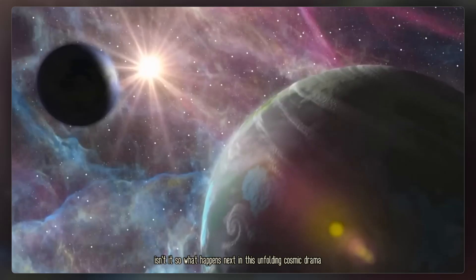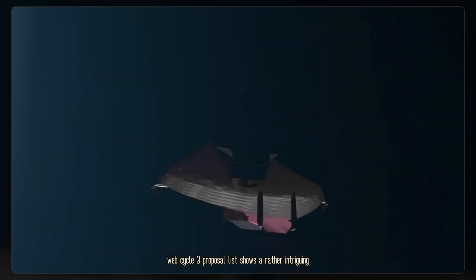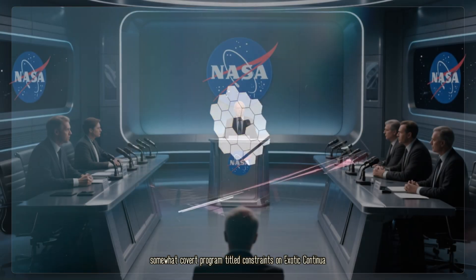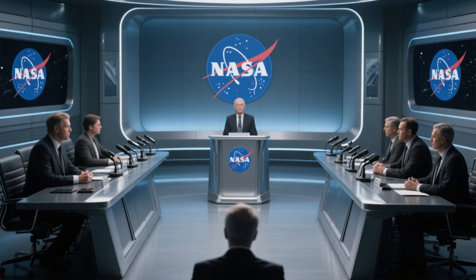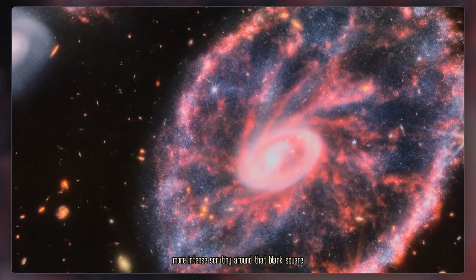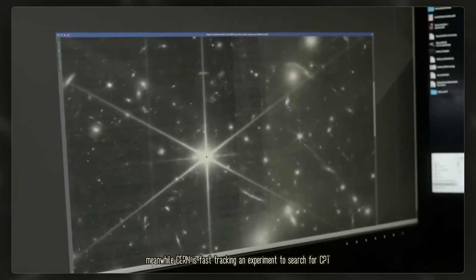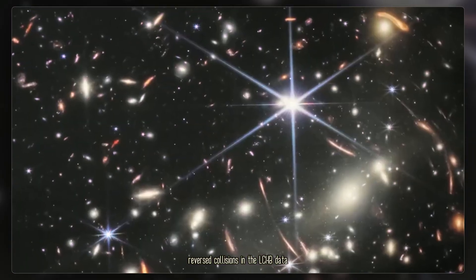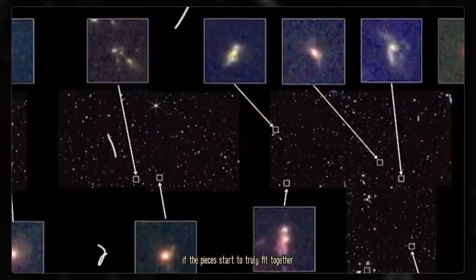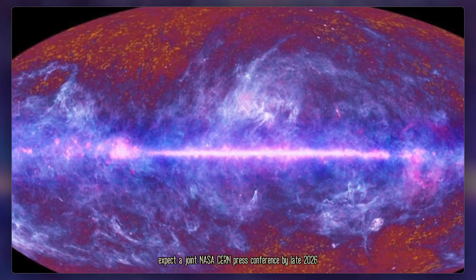So what happens next in this unfolding cosmic drama? Webb's Cycle 3 proposal list shows a rather intriguing, somewhat covert program titled Constraints on Exotic Continua. Translation? More deep exposures, more intense scrutiny around that blank square. Meanwhile, CERN is fast-tracking an experiment to search for CPT-reversed collisions in the LHCB data. If either finds corroboration, if the pieces start to truly fit together, expect a joint NASA-CERN press conference by late 2026.